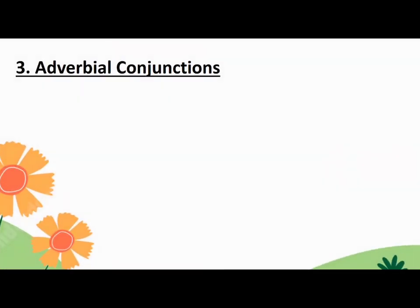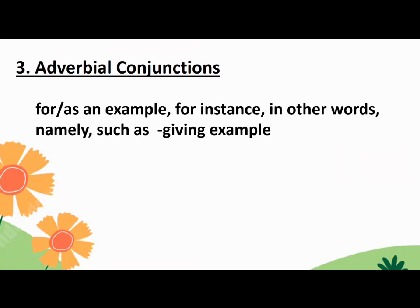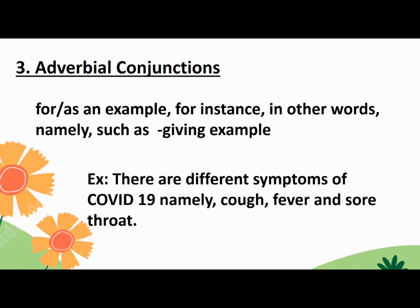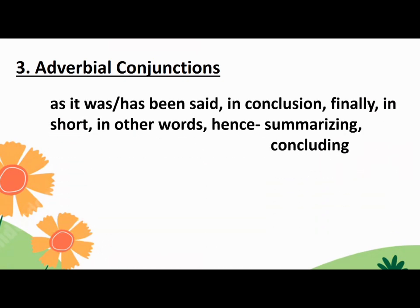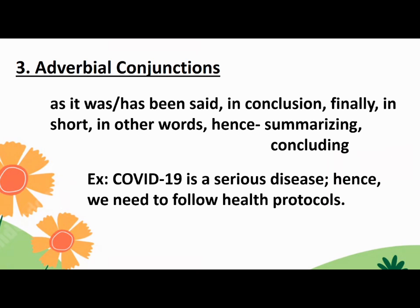Other adverbial conjunctions used in giving examples are: For, As an example, For instance, In other words, Namely, Such as. Example: There are different symptoms of COVID-19, namely cough, fever, and sore throat. More examples used in summarizing or concluding are: As it was, Has been said, In conclusion, Finally, In short, In other words, Hence. Example: COVID-19 is a serious disease. Hence, we need to follow health protocols.